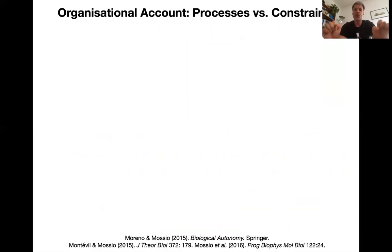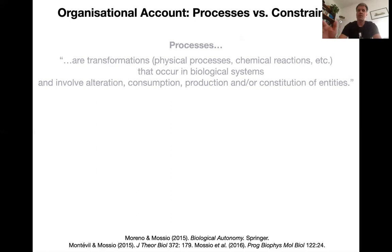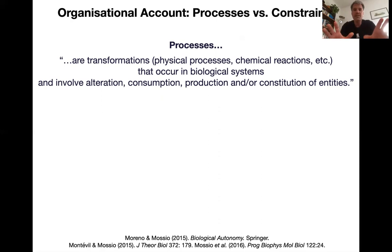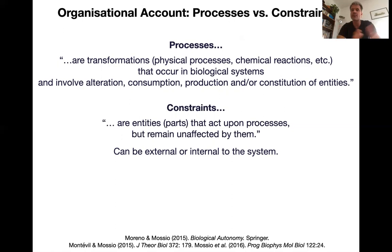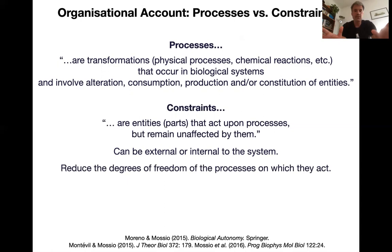The closure-of-constraints account is fundamentally based on the distinction between underlying processes and constraints on top. Processes are transformations — physical processes, chemical reactions — that involve alteration, consumption, production, and constitution of entities like metabolic building blocks and macromolecules. Constraints are entities or parts that act upon processes but remain unaffected by them at the relevant timescale. They can be external or internal to the system — the system is only closed to efficient causation, not to matter or energy. Constraints reduce the degrees of freedom of the processes on which they act.